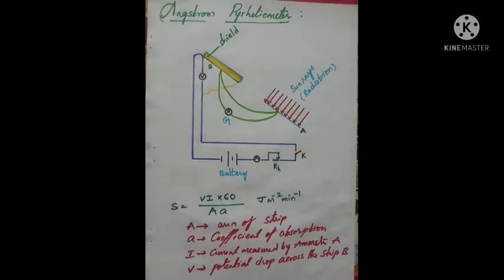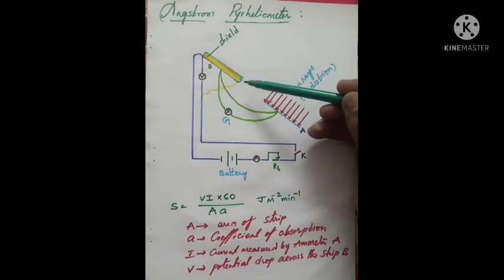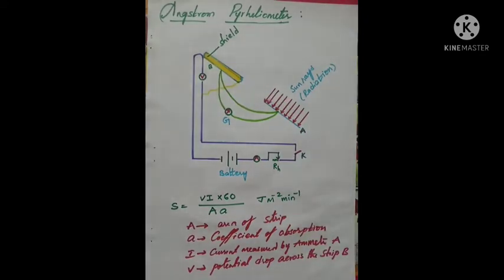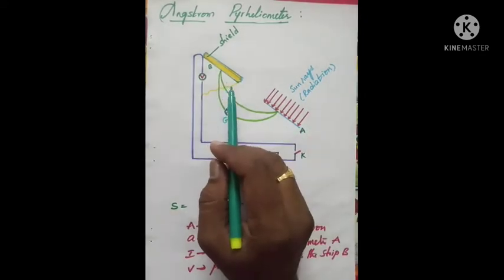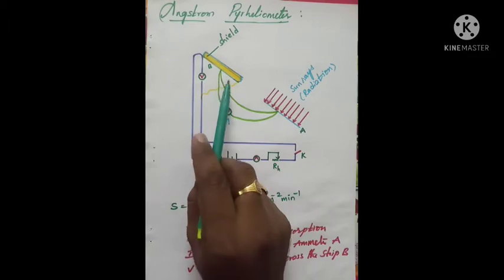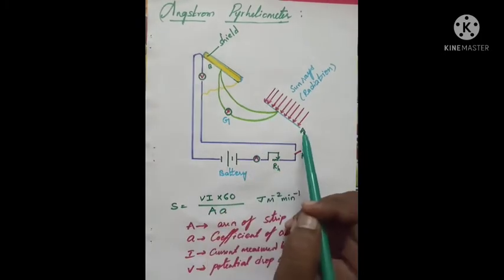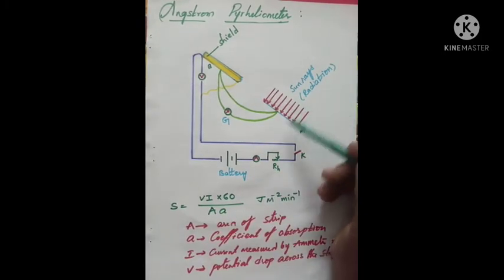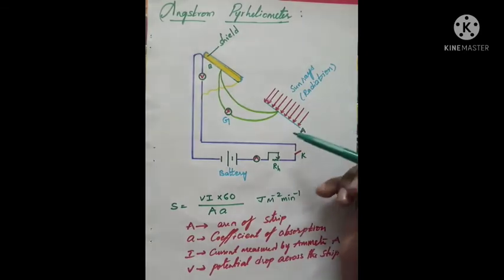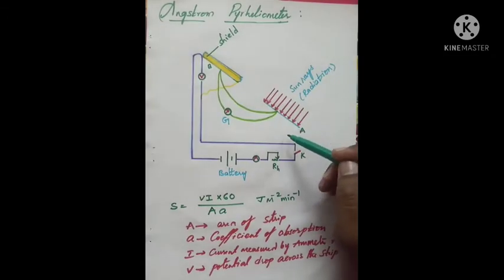The Ångström pyrheliometer consists of two thin, exactly similar blackened strips A and B, which are prepared from platinum or manganin. These two strips are suitably mounted so that strip A is exposed to solar radiation falling normally on it.